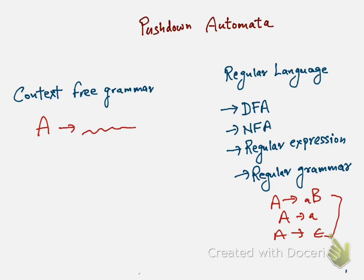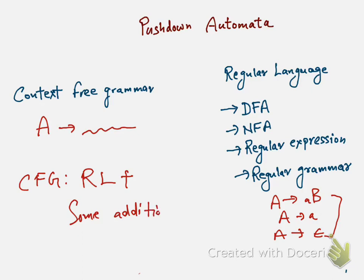Context-free grammar can actually recognize certain languages which are not regular. Any regular language is also a context-free language, so context-free grammar can recognize regular languages. In addition, context-free grammar can recognize some additional languages — still not all the languages in sigma-star, but more than regular languages.